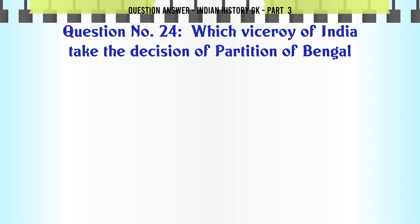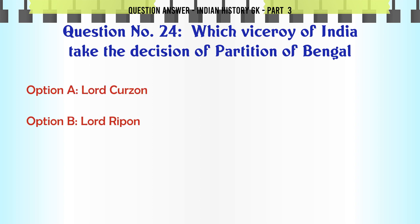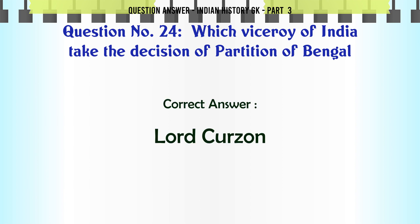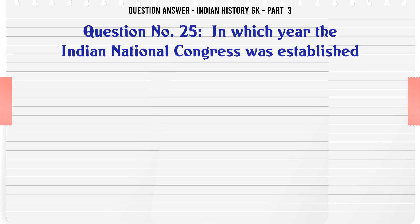Which Viceroy of India took the decision of partition of Bengal? A. Lord Curzon, B. Lord Ripon, C. Lord Wellesley, D. Lord Minto. The correct answer is Lord Curzon.